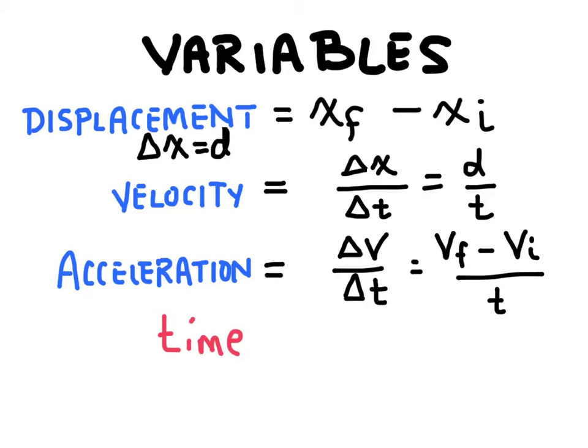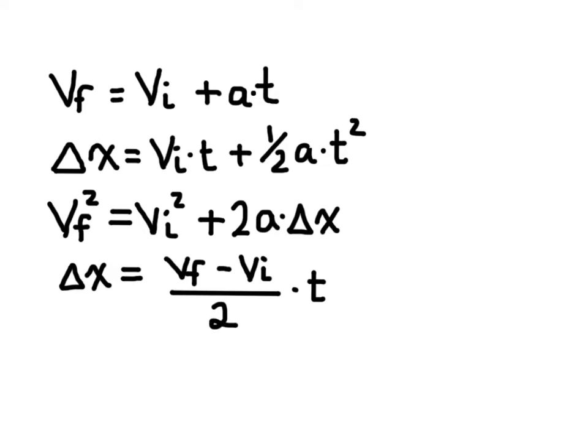Now why would we ever want to use a larger equation in the first place? Why wouldn't we just always use these equations? Well because sometimes we're going to need to solve a problem where there are some variables that are missing. For example, if we wanted to know velocity, or maybe the final velocity of an object, but we didn't know time, it would be pretty tough to do that with these equations that we have right here.